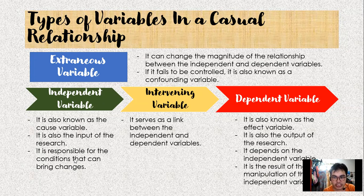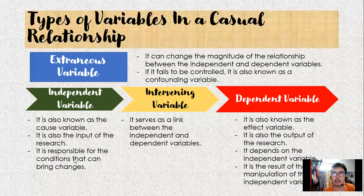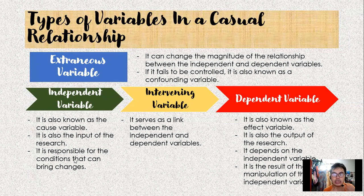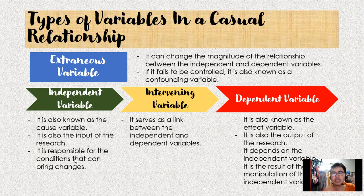When we say extraneous variable, it serves as an external factor of the research that can change the magnitude of the relationship between the independent and dependent variables. It can come out of the blue, and it can affect both the independent and dependent variables. If it fails to be controlled, it is also known as a confounding variable.